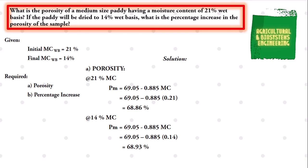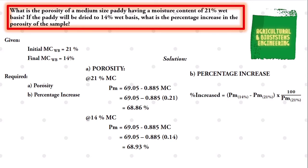After solving the values for the porosity, let us now solve for the value of the percentage increase if the sample is dried to 14%. We will be using the formula: percentage increase is equal to the difference of the porosity of the final moisture content minus the porosity of the initial moisture content, multiplied by 100, all over the porosity of the initial moisture content. We already have all the values, so we substitute: 68.93% minus 68.86%, multiplied by 100, all over 68.86. We solve and we have 0.07% multiplied by 1.45, giving a final answer for our percentage increase of 0.10%.